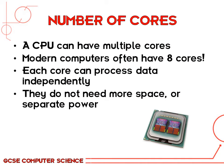A CPU can have multiple cores. In modern times, we commonly have CPUs with quad core or up to 8 cores inside one CPU. Each core in a CPU can process data independently. The more cores, the more instructions it can process. The advantage is like having 4, 5, 6 or even 8 CPUs, but they don't need extra space or separate power for each one.